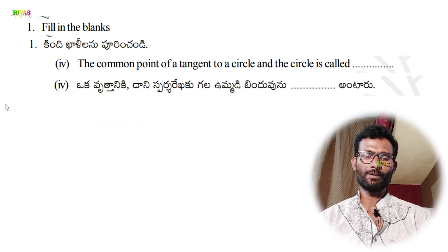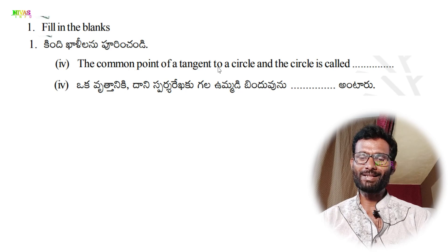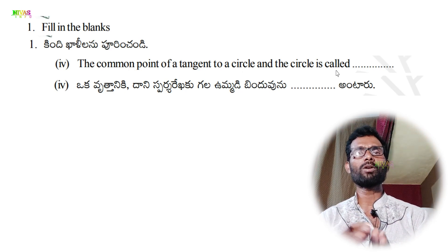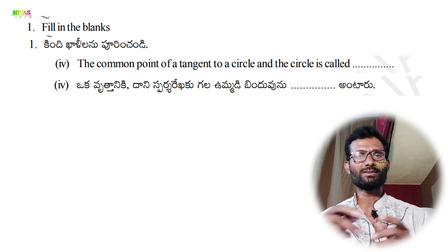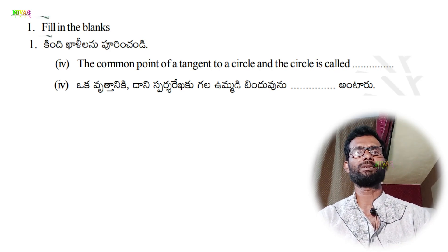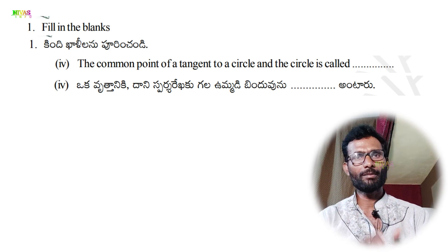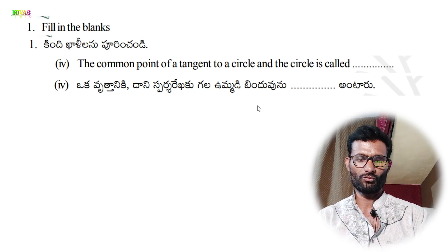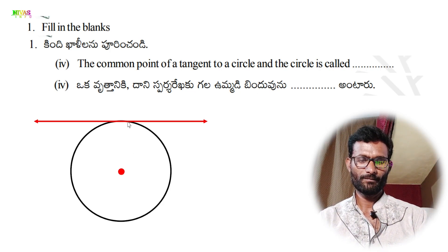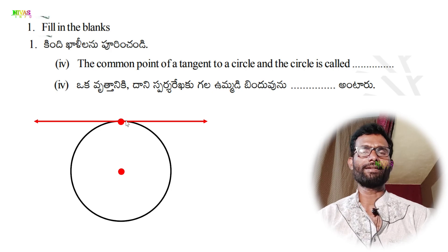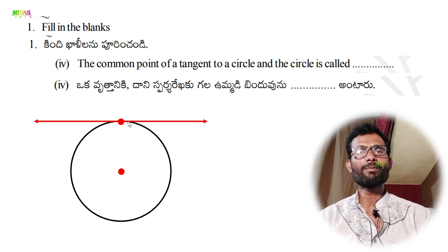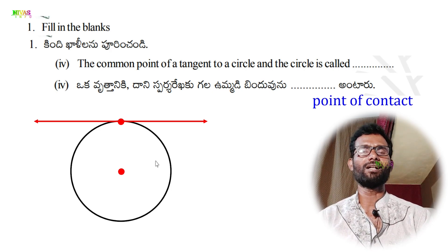Fourth one: the common point of a tangent to a circle and the circle is called what? If we draw a circle with a tangent touching it, that common point is called the point of contact.